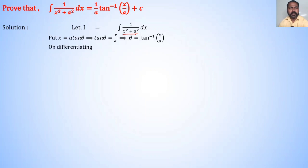On differentiating x = a tanθ: the LHS contains the term x and RHS contains terms of θ. We differentiate LHS with respect to x and RHS with respect to θ. Derivative of x with respect to x is 1, multiplied by dx. Derivative of a tanθ: a is constant, derivative of tanθ is sec²θ, multiplied by dθ. Therefore, dx = a sec²θ dθ.